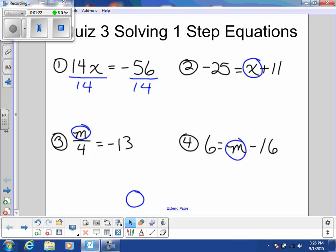What that will accomplish is this: 14 divided by 14 is 1, so now I'm left with 1x, just written as x, the coefficient is invisible 1.